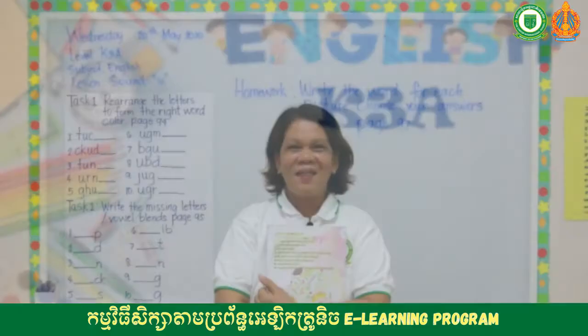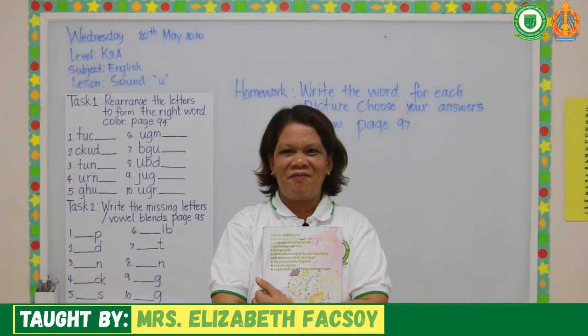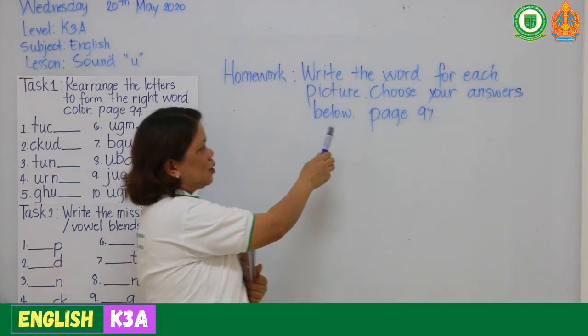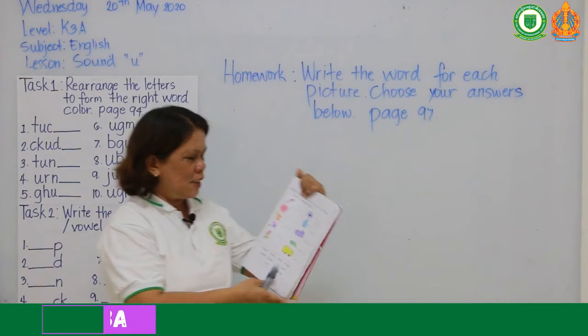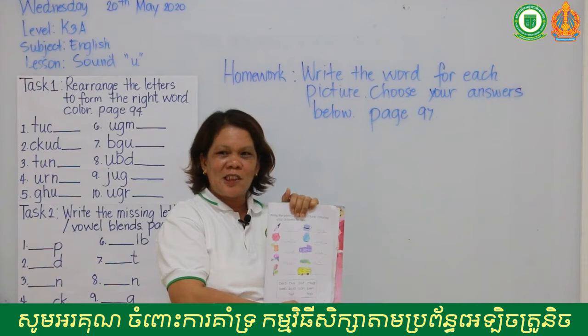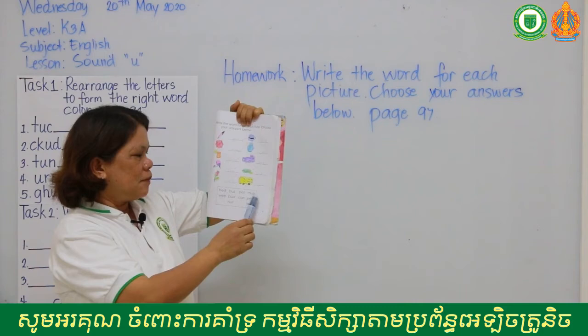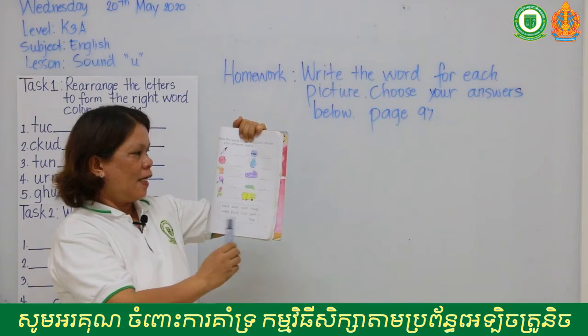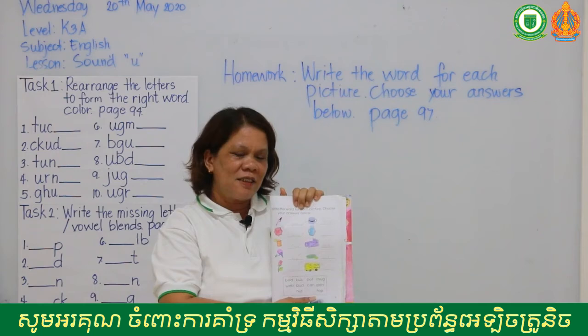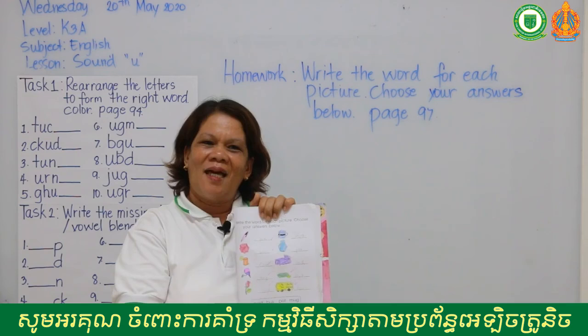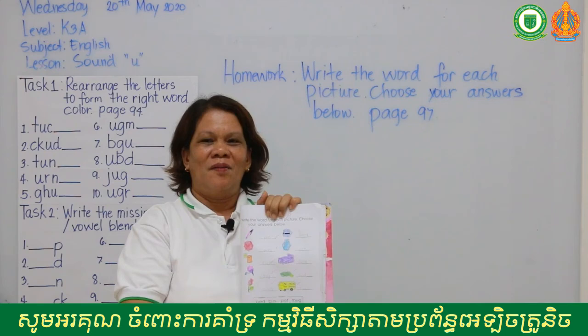Okay kids, are you done? So for this video I'm going to give you your homework. At page 97 you're going to write the word for each picture — choose your answers from the box below. The words in the box are: bed, bus, pot, mug, web, bud, can, pen, knot, top. After answering this activity, you're going to color all the pictures. You're going to submit this on Friday. Thank you for listening, please read your book. Thank you for today — see you on Friday, bye bye!